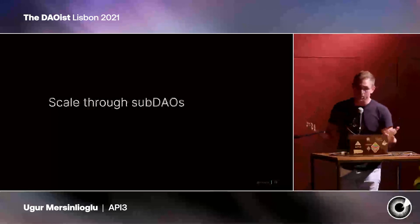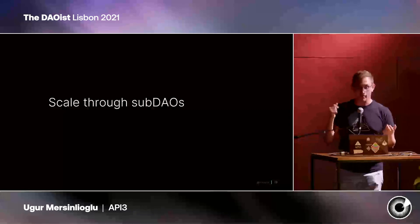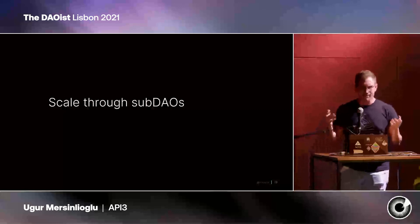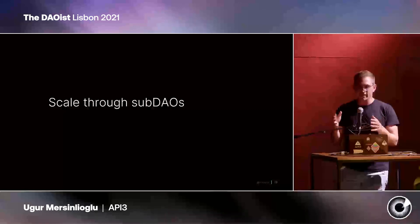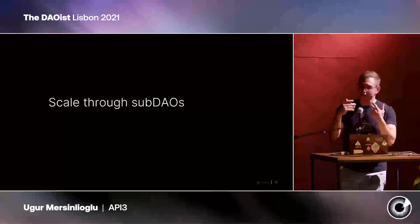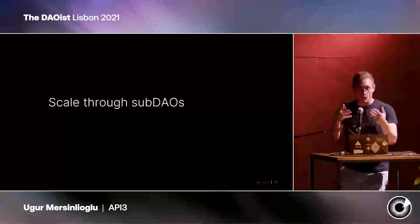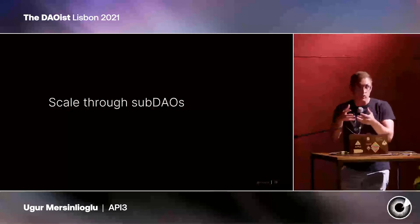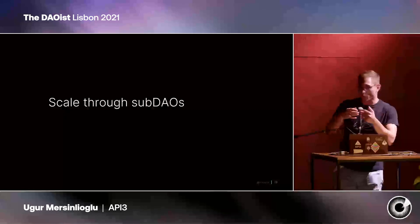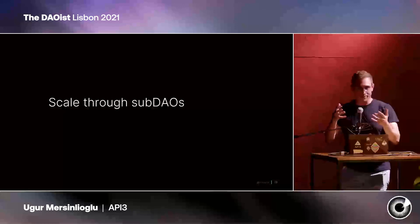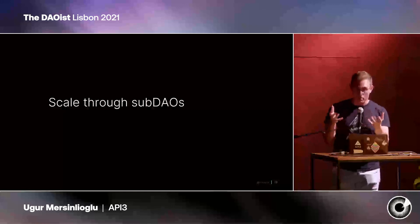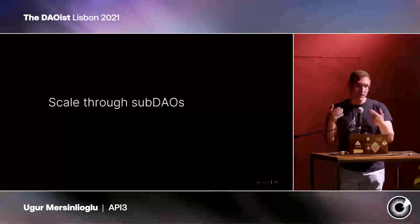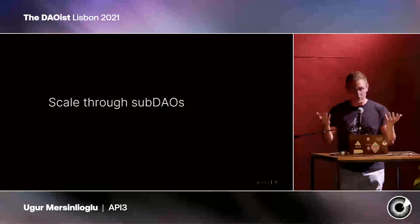Our vision for this is basically to scale through sub-DAOs. A sub-DAO is a group of people or an existing DAO that excels at something — for instance, a group good at Rust or substrate development, or a translate DAO that can help with Portuguese and French. They take ownership of something API3 needs help with, while benefiting themselves, monetarily or otherwise.